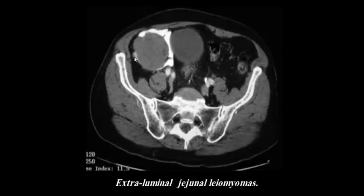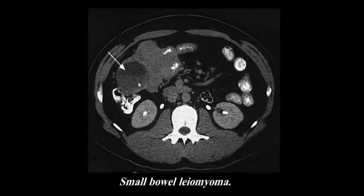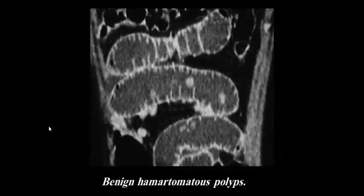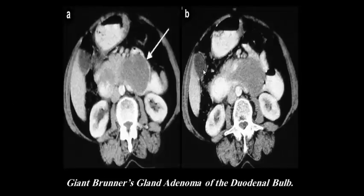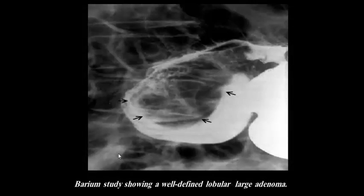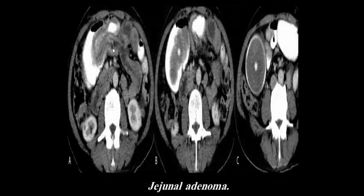Examples of extraluminal lipoma include small bowel lipoma with a mass arising from the wall and globular thickening with low contrast enhancement. A benign stromal tumor of the small bowel is also shown. A giant Brunner's gland adenoma of the duodenal bulb presents as an irregular hyperdense mass with poor contrast enhancement. Barium study shows a well-defined lobular large adenoma of the duodenal bulb with heterogeneous enhancement and density.